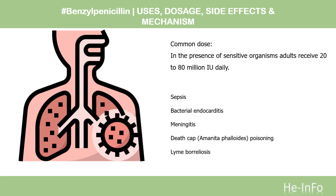Death Cap (Amanita phalloides) poisoning: In general, 0.5 to 1.0 million IU/kg daily. Lyme borreliosis: 20 to 30 million IU daily, in 2 to 3 doses, for 14 days in adults; and 0.5 million IU/kg in 2 to 3 doses for 14 days in children. According to WHO recommendations, treatment of streptococcal infection should be continued for at least 10 days.